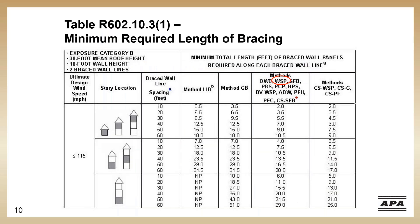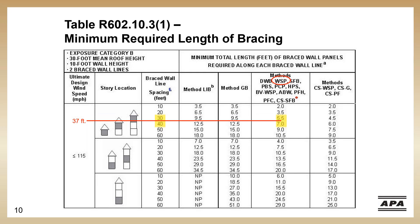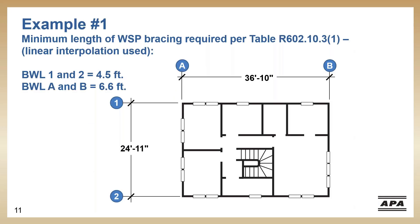Our first step is to determine the required length of bracing. The left-hand column shows our ultimate wind speed, which is 115. The next column is your story location — we are the upper floor of a two-story, so we're in the first row. We're using method wood structural panel. We have approximately 25-foot spacing between brace wall lines one and two, and about 37 feet between brace wall lines A and B. After interpolating those numbers, for brace wall lines one and two we need 4.5 feet of bracing, and for brace wall lines A and B we need 6.6 feet of bracing.